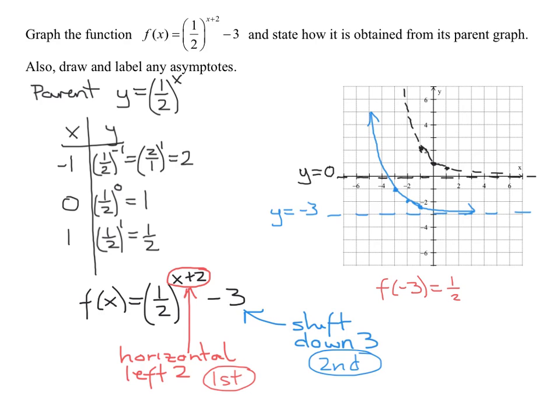Well, it's 1 half raised to the negative 3 plus 2, and then we're going to subtract 3 from the answer. So that's 1 half raised to the, what is negative 3 plus 2? Negative 1 minus 3. So 1 half to the negative 1 is 2. So 2 minus 3 is negative 1. So negative 3, negative 1 should be on my graph. Is it negative 3, negative 1? That's what we got by transformations.